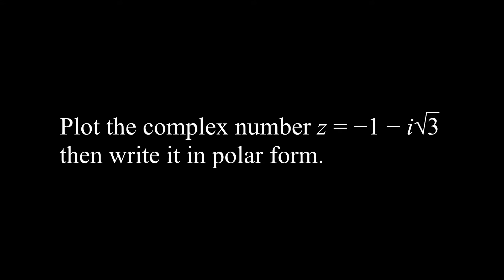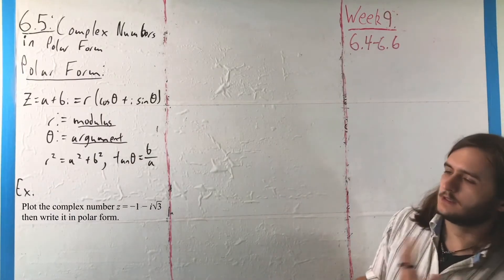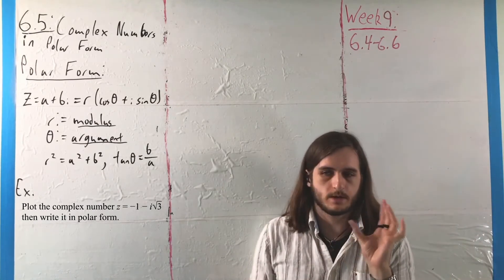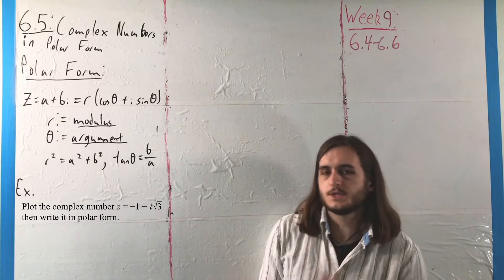For this example, we want to plot the complex number z = -1 - i√3, and then write it in polar form. We wrote this in a slightly different way because we don't want to catch i in the square root - that sounds inconvenient.